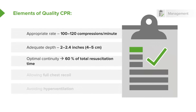The third determinant is continuity. You should be performing CPR for a minimum of 60% of your total resuscitation time, if not more. Fourth is chest wall recoil — that's diastole in cardiac arrest, and it's what allows the heart to refill. We want to allow the chest to recoil so the heart can fill normally, making each compression count.